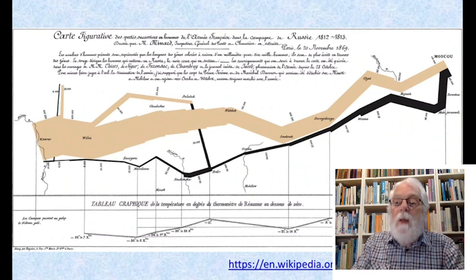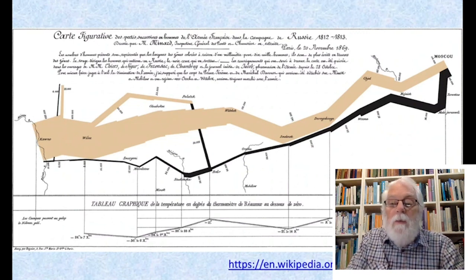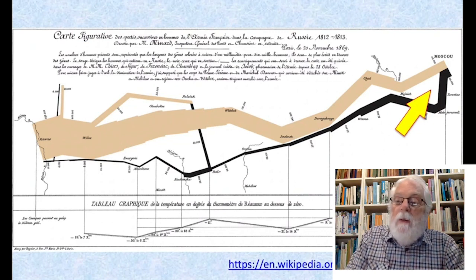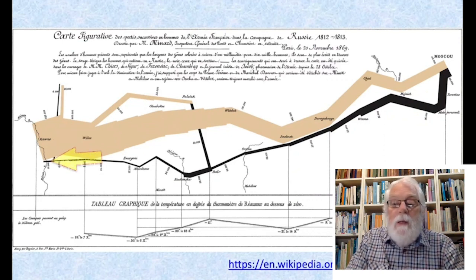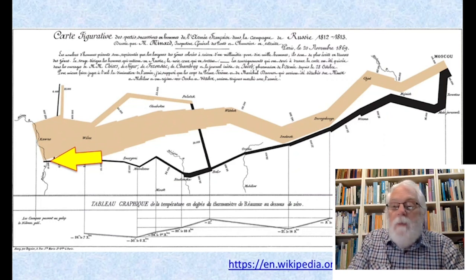The idea of information visualization has been around for a long time, long before the age of computers. One of the classic historical examples I like to refer to is this map of Napoleon's ill-fated 1812 Russian campaign. It shows the actual path from Poland on the left to Moscow on the right followed by Napoleon's army. The line representing this path has its width proportional to the size of that army at each point — 400,000 advancing from Poland at the start, and just 10,000 returning on the retreat. Readily conveyed by this visualization are aspects such as the significant losses that occurred during the retreat because of the bitter Russian winter that caught them unawares.